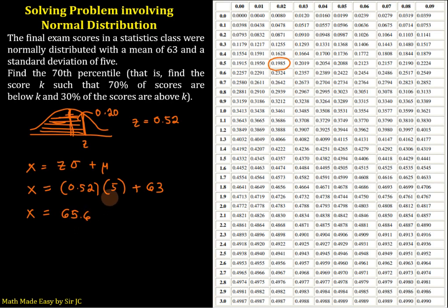What does this mean? This means that 70% of the students who took the exam got a score less than 65.6. That's how to solve problems involving normal distribution.